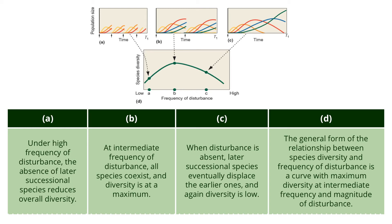Lastly, Graph D indicates the general form of the relationship between species diversity and frequency of disturbance, which is a curve with maximum diversity at intermediate frequency and magnitude of disturbance.